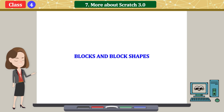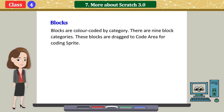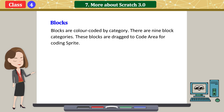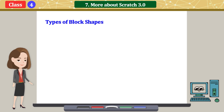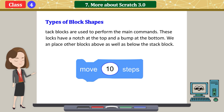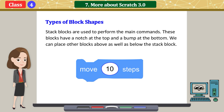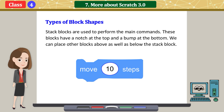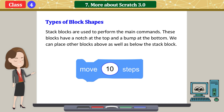Blocks and block shapes. Blocks are color coded by category. There are 9 block categories. These blocks are dragged to the code area for coding a sprite. Stack blocks are used to perform the main commands. These blocks have a notch at the top and a bump at the bottom. We can place other blocks above as well as below the stack block.